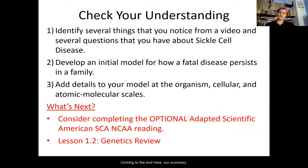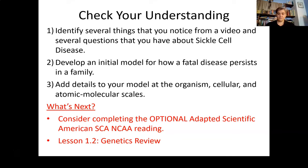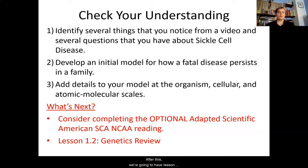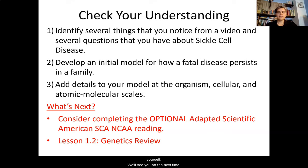Coming to the end — our summary and checking your understanding. You've identified several things you noticed from Shania's story and questions about sickle cell disease. You're developing an initial model for how a fatal disease persists in the family, adding details at the organism, cellular, and atomic molecular scales. What's coming up next: consider completing the optional Adapted Scientific American reading. After this, you'll have lesson 1.2, which will get us started in our genetics review. Thanks for your time — please take care of yourself, and we'll see you next time.